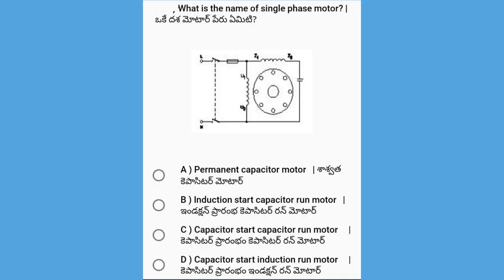Next, what is the name of the single phase motor shown in the diagram? The options are Permanent Capacitor Motor, Induction Start Capacitor Run Motor, Capacitor Start Capacitor Run Motor, and Capacitor Start Induction Run Motor.